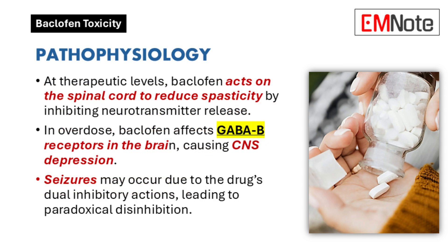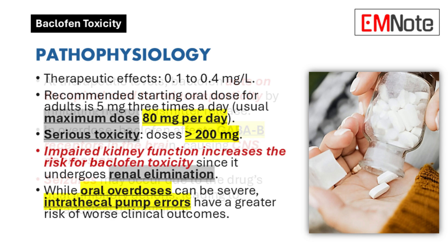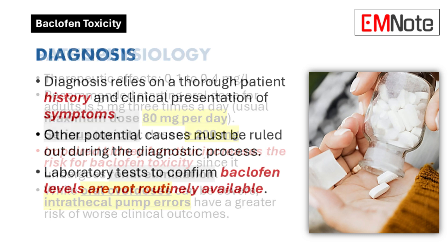How does this toxicity actually occur? While exceeding the recommended dosage is a primary cause, it's not the only factor. At therapeutic doses, baclofen primarily acts on the spinal cord. However, overdose extends its effects to the brain, causing central nervous system depression. Paradoxically, this can even trigger seizures. The maximum recommended daily dose is 80 milligrams for adults and 60 milligrams for children over eight. So it's not just about the total amount, but also where the drug acts within the nervous system.